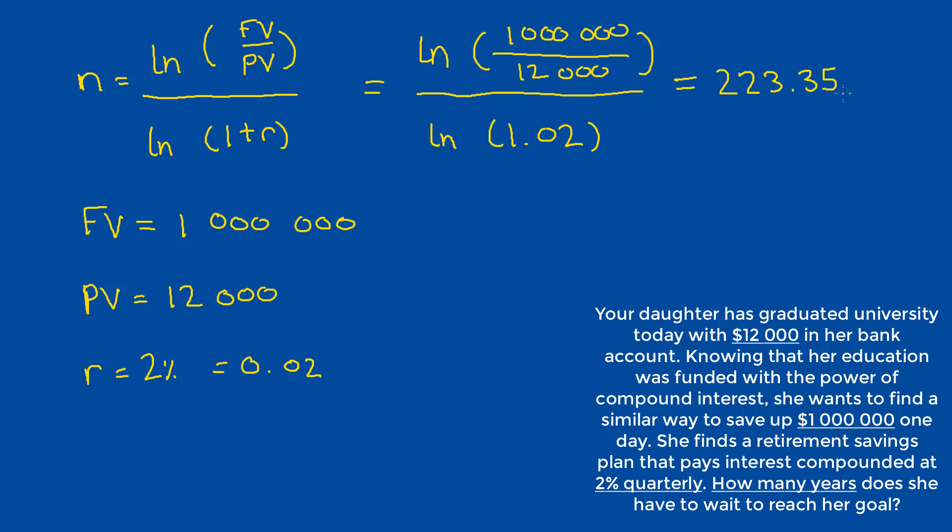However, the partial quarters are not going to work. We know that we don't get money in between the quarters. We get money only on each quarterly date. So we're going to have to round this value up to 224. And then we know this is the number of quarters, and we have to divide that by 4. And when we do so, we get number of years is equal to 56. So this is our final answer.